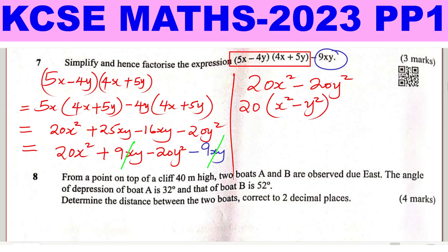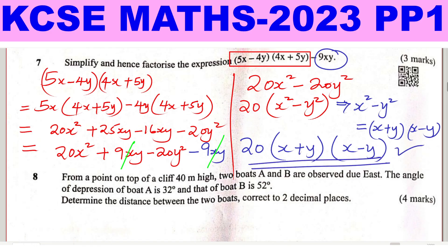Remember the difference of two squares. x squared minus y squared is equivalent to x plus y times x minus y. Therefore this will be 20 brackets, x plus y times x minus y, and this is the final solution.